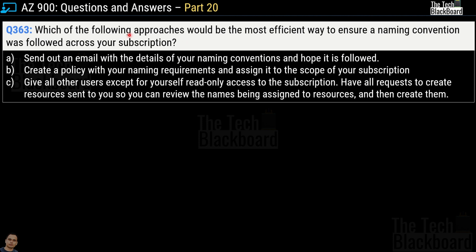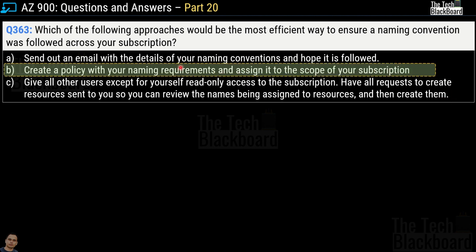Question number 363: which of the following approaches would be the most efficient way to ensure a naming convention was followed across your subscription? Options are: send out an email with naming convention details and hope it was followed; create a policy with your naming requirements and assign it to the scope of your subscription; or give all users read-only access and review all resource creation requests yourself. The correct answer is option B — create a policy with your naming requirements and assign it to the scope of your subscription.